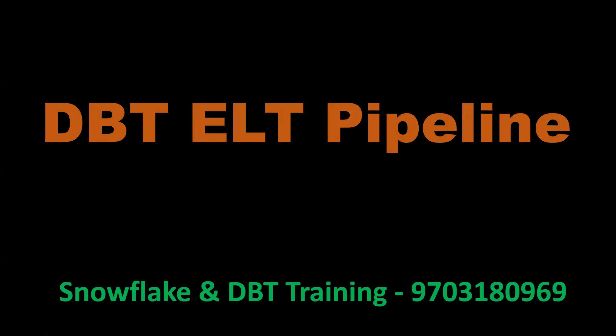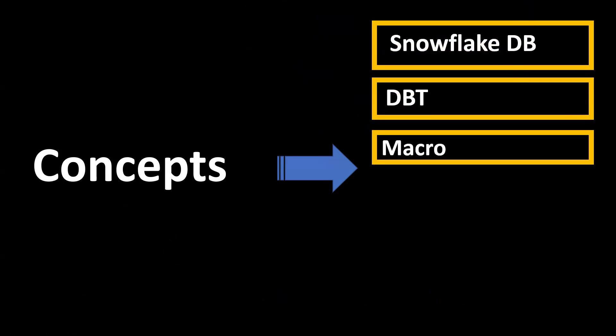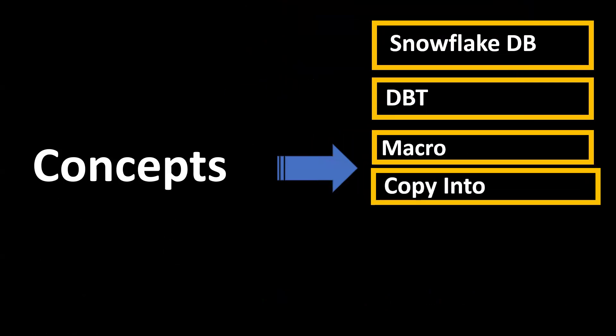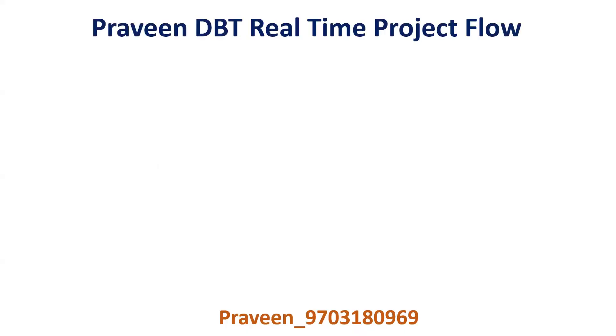Hello, welcome back to my channel. Praveen Kumar here. Today is one of the interesting topics: dbt ELT pipeline from on-premises to Snowflake — how you can load data from AWS S3 into Snowflake using the dbt macros concept. Before we begin, you should have understanding of the following: Snowflake database, dbt Cloud, macros — what a macro is, how it works, and how to call it — the COPY INTO command, and AWS S3 staging.